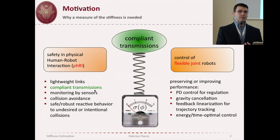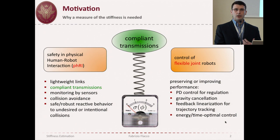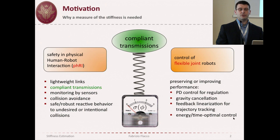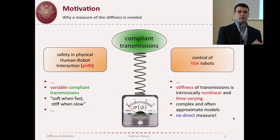If you are able to use it in a good way you can exploit the safe behavior of your transmission. If you are not able to do that, you have a dangerous robot, because clearly with a compliant transmission you can store energy, and if you release this energy during contact, it is very dangerous. With this in mind, stiffness estimation is very important.